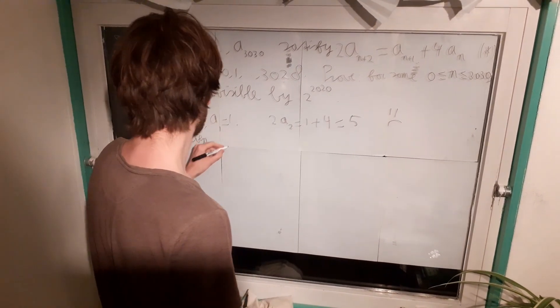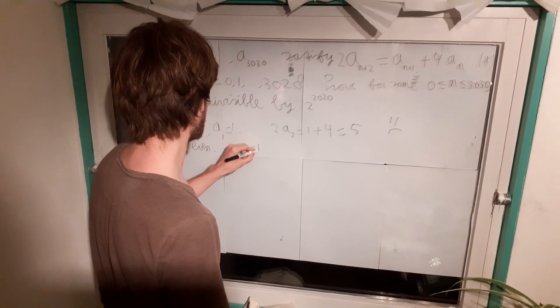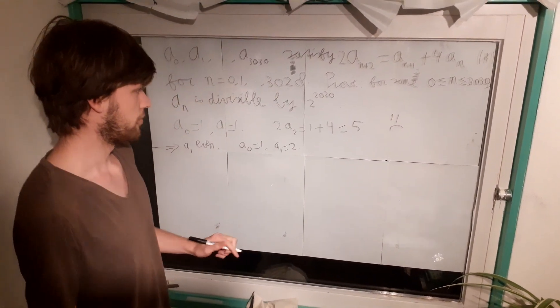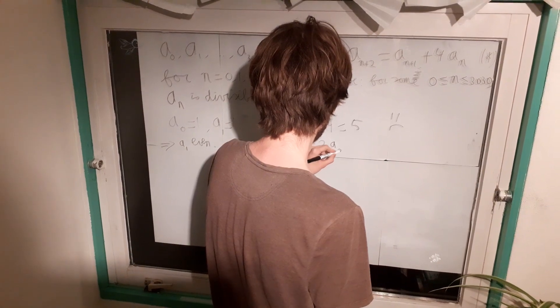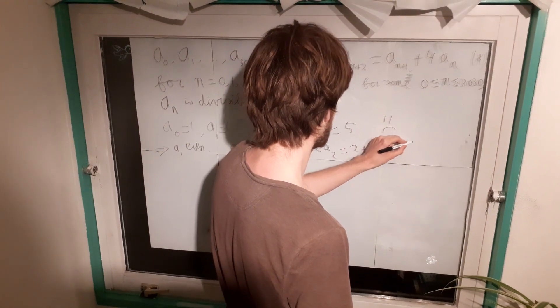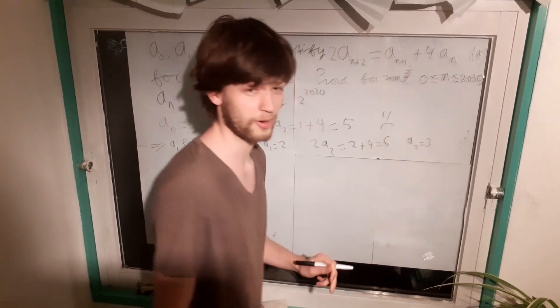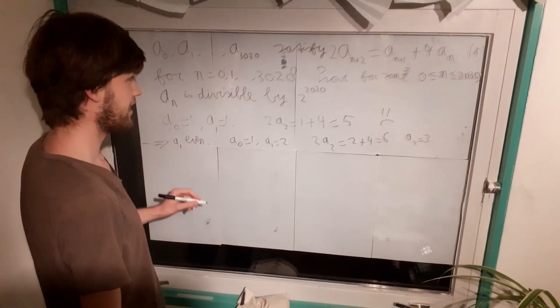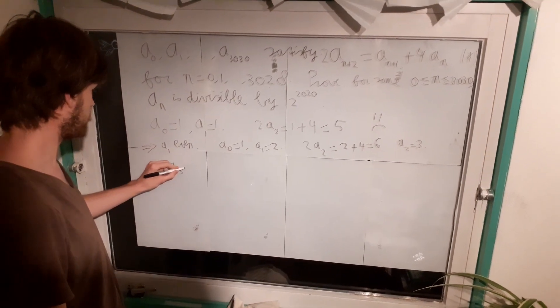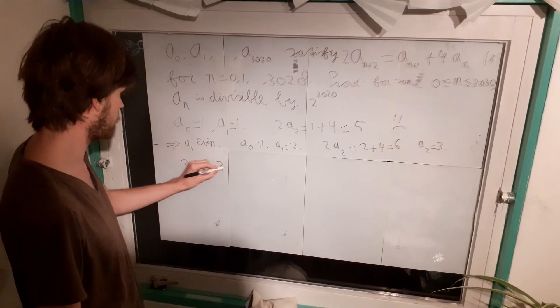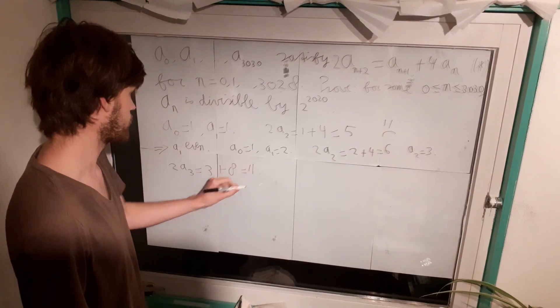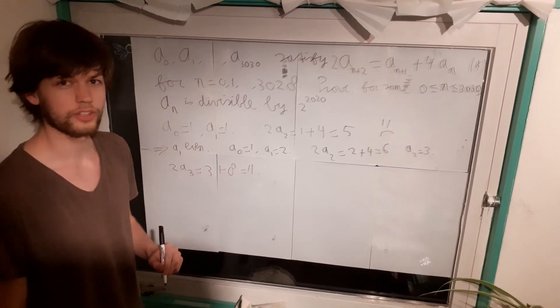Then we can make our next example. The second easiest example would be a0 is 1 and a1 equals 2. In this case, we would get 2a_2 equals 2 plus 4 is 6. So a2 is 3. Okay, so we already have 3 terms in our sequence. Amazing. Then we can go on to calculate a3. We get 2a_3 equals a2 is 3 plus 4 times a1, so that would be 8. Oh, so now we get 2a_3 is 11. But this is a contradiction again.